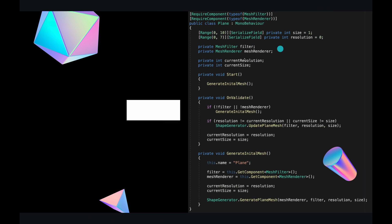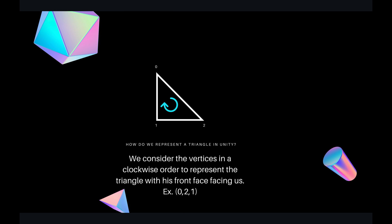So how do we represent a triangle in Unity? We specify the vertices in a clockwise order. So if we want a triangle that faces us, we specify the vertices like this: 0, 2, 1 is a triangle that faces us. If we specify 0, 1, 2 — which is anti-clockwise — we are specifying a triangle that points away from us, and in Unity you cannot see the back of a triangle due to backface culling. So be careful — always specify triangle vertices in clockwise order.